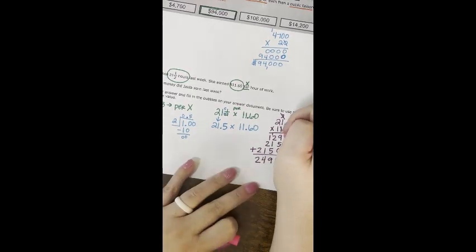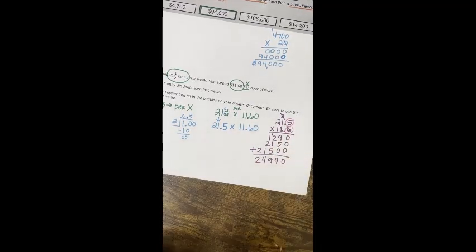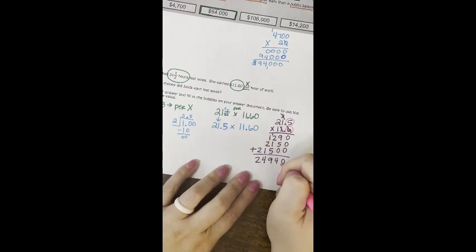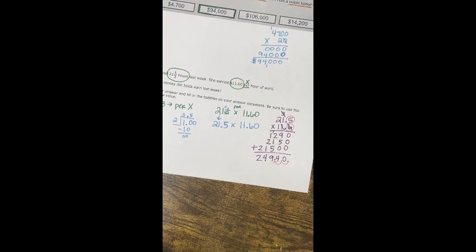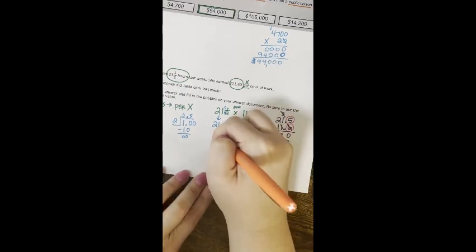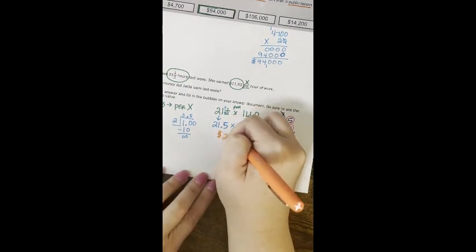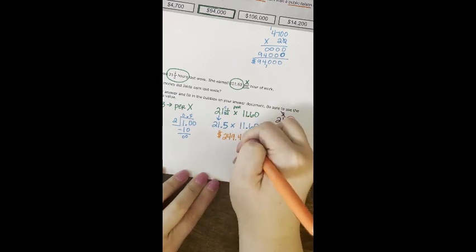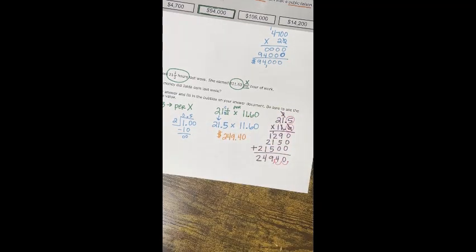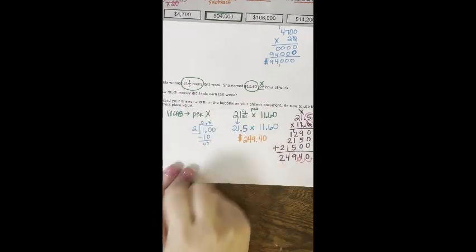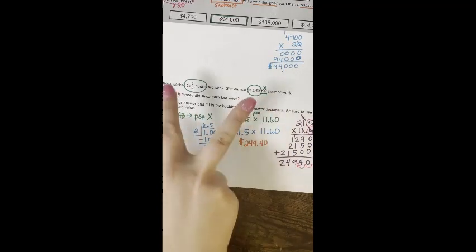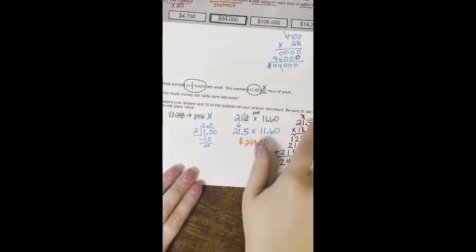I'm ready to add. I have 0, 14, 3, 4, 9, 3, 4, and 2. Then my last step is to count my decimal places, so I have one, two behind the decimal, so I will bunny hop one, two. This is $249.40. For this week Jada earned $249.40.